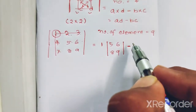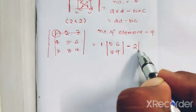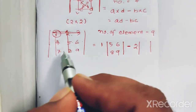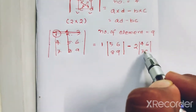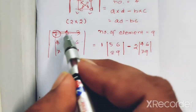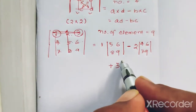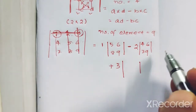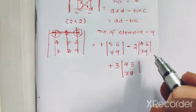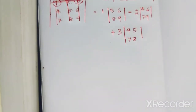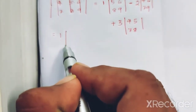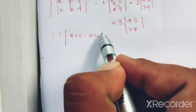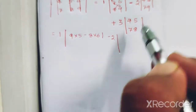Then minus symbol, then the first row's next element 2, with corresponding columns 4, 6, 7, 9. Then the third element of the first row, 3, with corresponding columns 4, 5, 7, 8. So the expansion gives: 9×5 minus 8×6, minus 2 times the cross-multiplication of that submatrix.